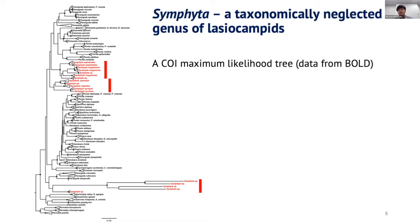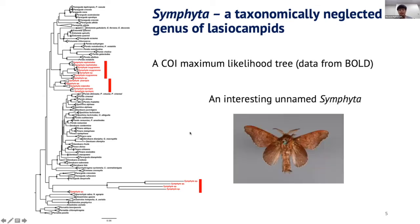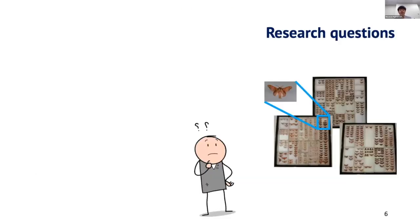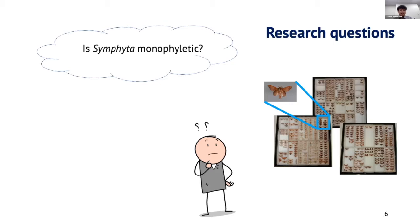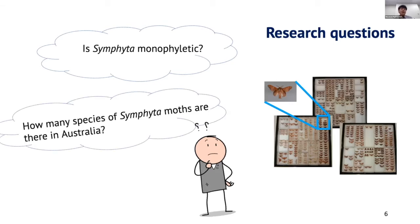So I downloaded the sequences from BOLD and built a tree. The tree showed interesting results, as Simphita was recovered as not monophyletic — they have three unrelated lineages, as indicated by the red bars. In addition, previous moth experts at ANIC have also identified unnamed species and placed them with the other five Simphita species in the collection. Based on all the available information and observation, we can start to ask: is Simphita monophyletic, and how many species of Simphita are there in Australia?